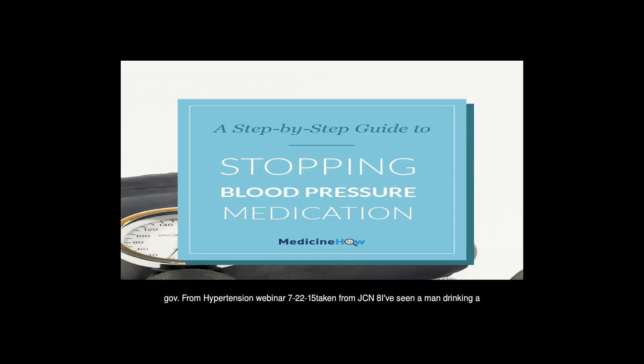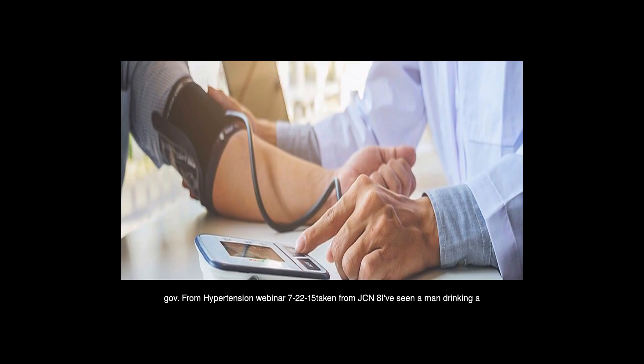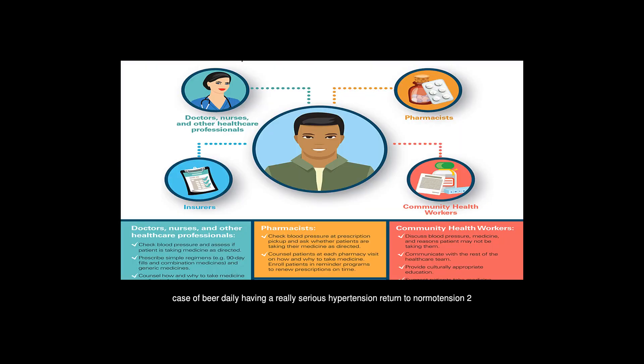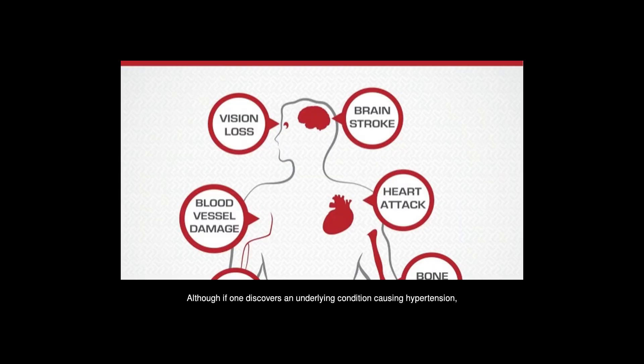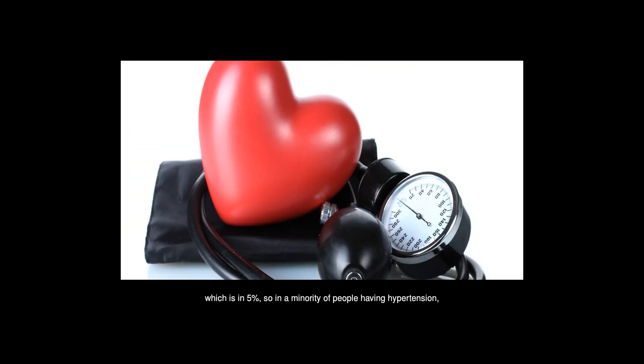I've seen a case of beer daily having a really serious hypertension return to normotension two weeks after stopping alcohol abuse. Although if one discovers an underlying condition causing hypertension, which is in 5%, so in a minority of people having hypertension, treating this can cure hypertension.